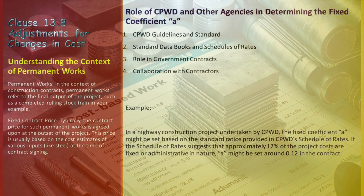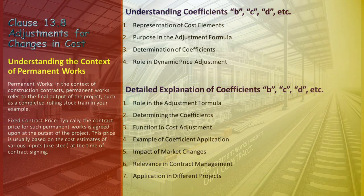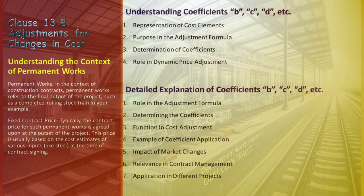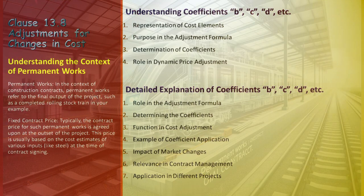In the formula PN = A + B(LN/L0) + C(EN/E0) + D(MN/M0), coefficients such as B, C, and D represent specific cost elements within the construction project. Commonly, B is for labor, C for equipment, and D for materials. These coefficients quantify the relative proportion of each cost element to the total contract value, highlighting the significance of each aspect in the overall project cost. They are critical in determining how each cost element contributes to the overall price adjustment, indicating the contract price's sensitivity to changes in labor, equipment, and material costs so that adjustments are accurately aligned with actual cost variations.